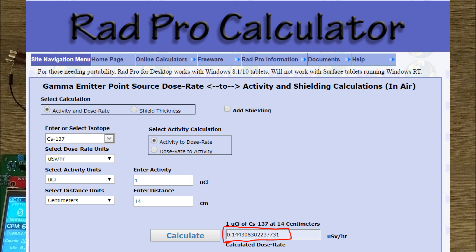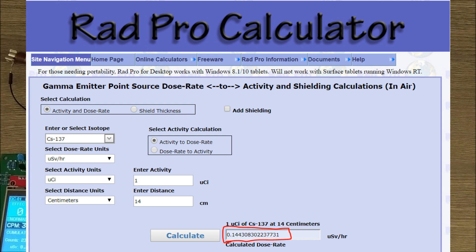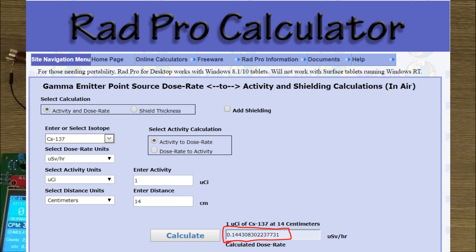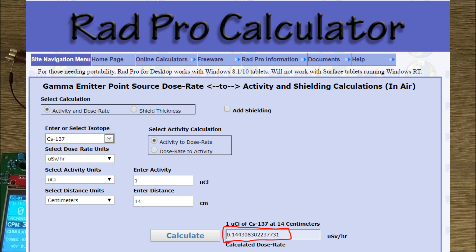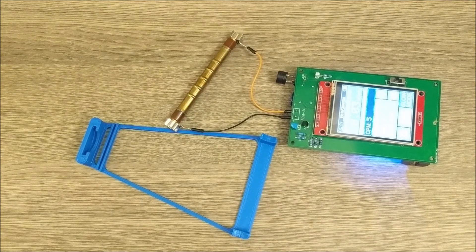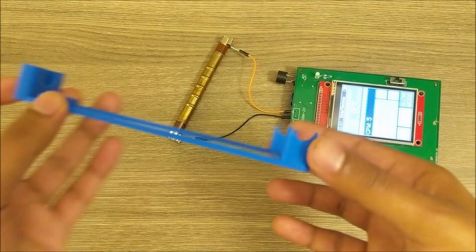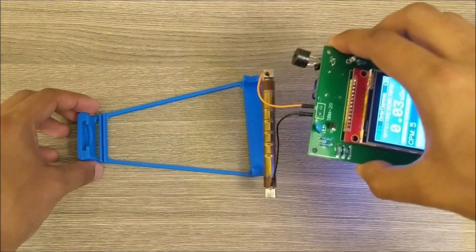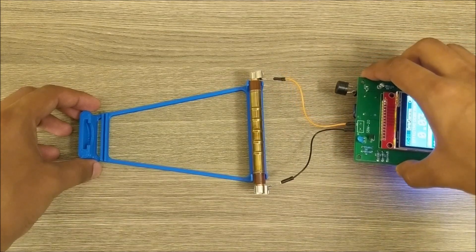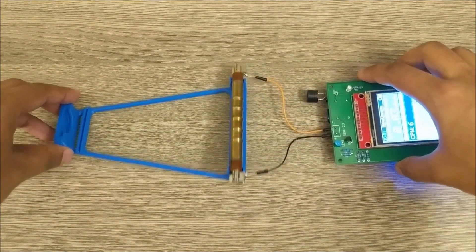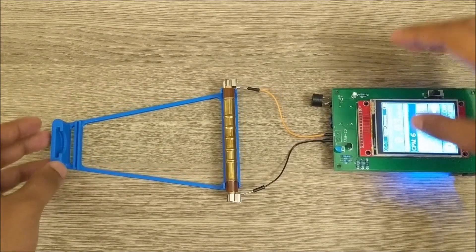Instead of doing all those calculations manually, I found that using an online calculator like the Rad Pro Calculator would be a lot easier. It lets you put in your isotope and distance and even let you add shielding if you want. I used a distance of 14 centimeters and found that the expected dose rate at that distance from this sample should be 0.144 microsieverts per hour. Now to measure the counts per minute, I actually designed this calibration jig and 3D printed it. It lets me place the Geiger tube like so, and then the sample goes in here. This maintains a precise distance and keeps them level.